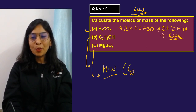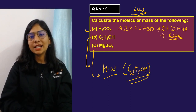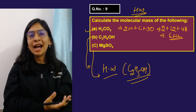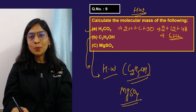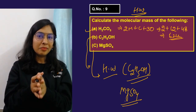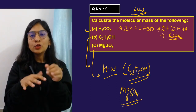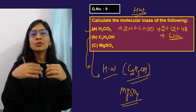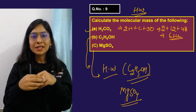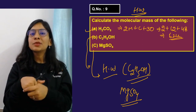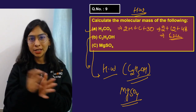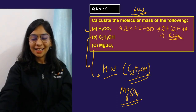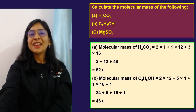Your homework: calculate the mass of C₂H₅OH — that's ethanol, the compound used in hand sanitizers that's saving us from corona. Also calculate the mass of magnesium sulfate, used as Epsom salt in pallet treatments for skin exfoliation to clear dead cells.